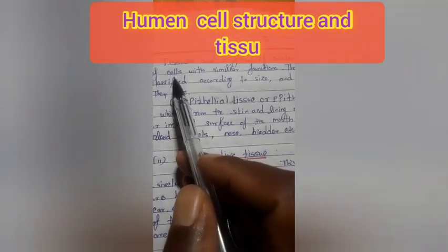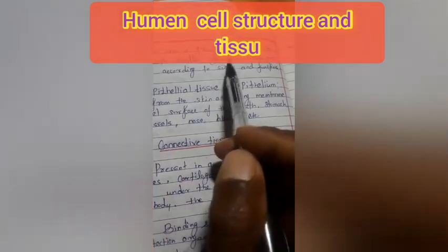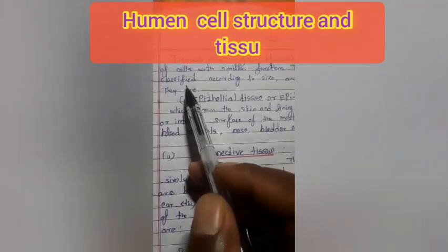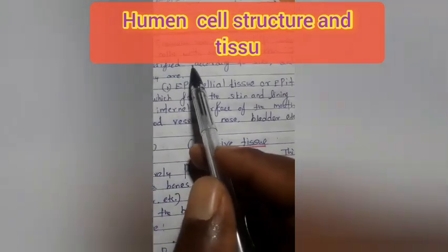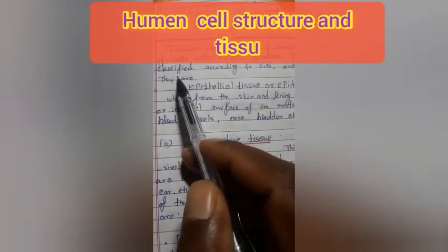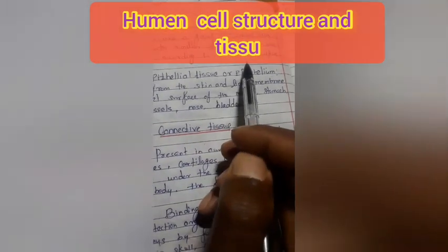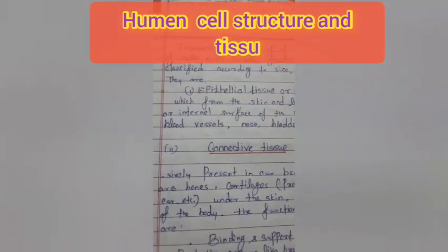Tissues: Tissues are a group of similar types of cells with similar functions. They are classified according to size and function.